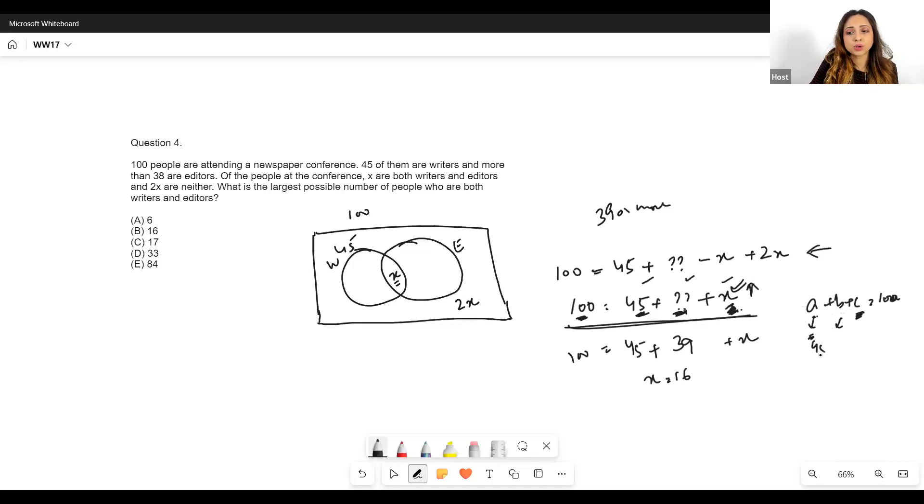One of them is already defined as 45, then I should make this as small as possible. And since this one is more than 38, so it will be at least 39. So then I'll take it as 39, that is the smallest value I can take. So my c gets maximized, my x gets maximized, and I get 16.